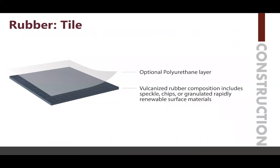Rubber tile usually has an optional polyurethane layer, but its vulcanized rubber composition includes speckles, chips, or granulated rapidly renewable surface materials, depending on the product composition.